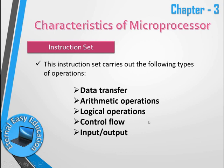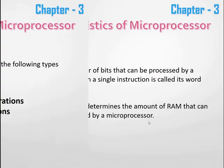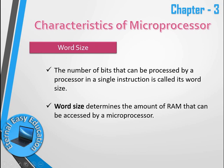The next characteristic is word size. The number of bits that can be processed by a processor in a single instruction is called its word size. Word size also determines the amount of RAM that can be accessed by a microprocessor.